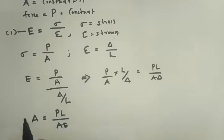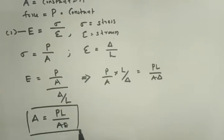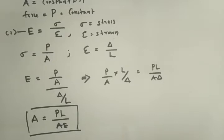Rearranging, the deformation delta equals PL divided by AE. This is the basic equation for the deformation of a prismatic bar of length L when it is applied by a gradually applied force P.